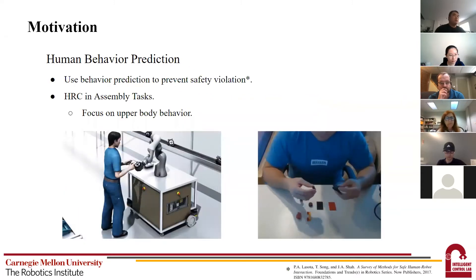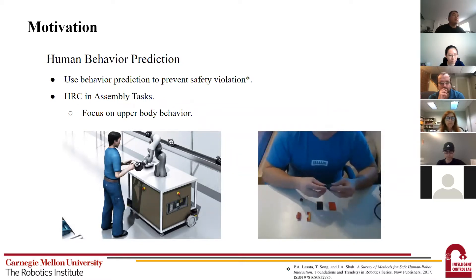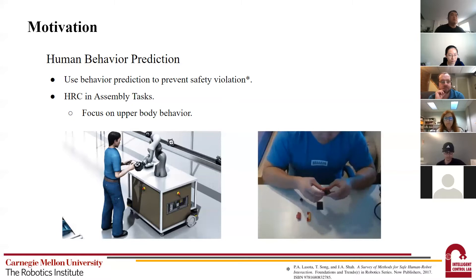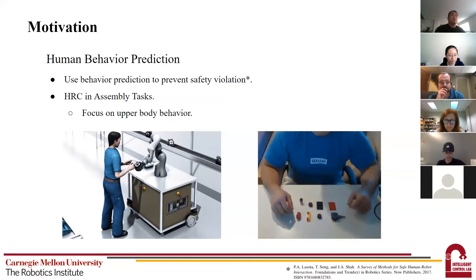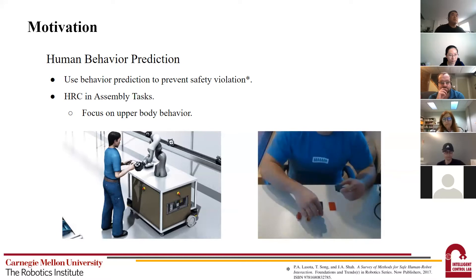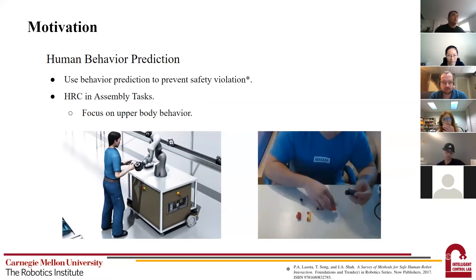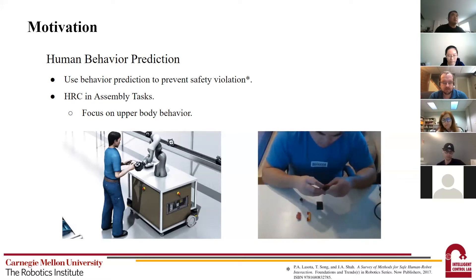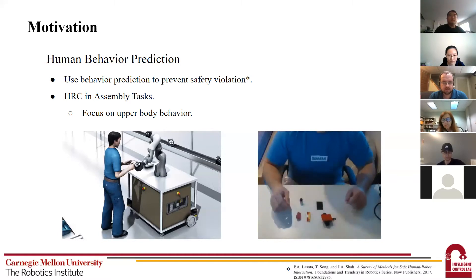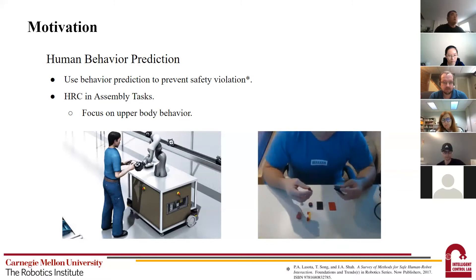We want to address this challenge by using behavior prediction. If we can foresee the human's behavior, we can design the robot to take the prediction into consideration and generate efficient motion that avoids potential collision. In this work we mainly consider the scenario of assembly tasks, in which the human stands or sits in front of a desk and uses some components to assemble a target object. The task could be assembling a desktop or assembling a lego, or something larger or heavier, and we mainly focus on upper body behavior in this scenario.